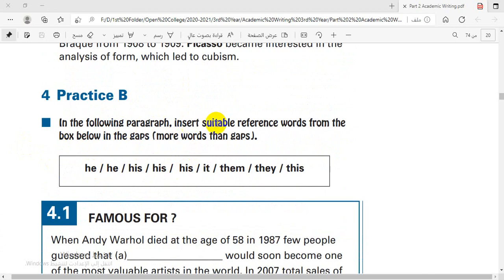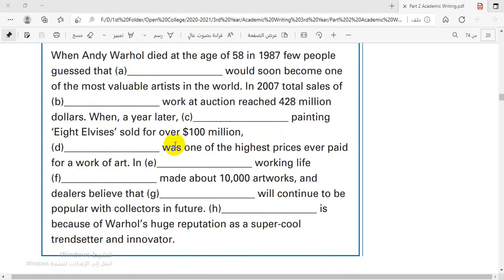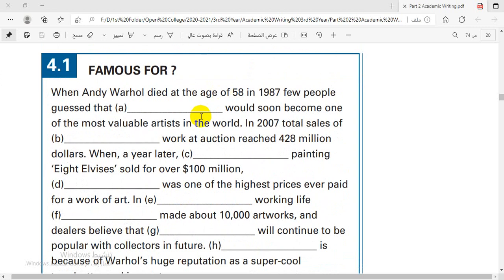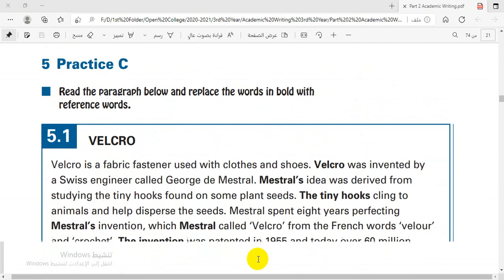Practice B. In the following paragraph insert a suitable reference word from the box below in the gaps, more words than gaps. We have these words that we want to fill to the gaps. I'm not going to read all the text but I'm just going to answer the gaps. Blank A we put the word he. In B we put the word his. In C also the word his because it is repeated. In D we put the word it. In E we put the word this. In F we put the word he. In G we put the word they. In H we put the word this. This is the answer, you can fill it up and check it.